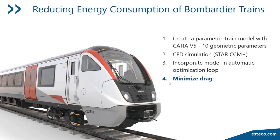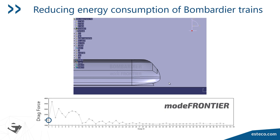We'll start with some real world examples. This first one is courtesy of Bombardier Trains. They used Mode Frontier to optimize the shape of their trains to minimize drag, which of course minimizes cost of operation and gives them a competitive edge. The solver in this case was CFD. Mode Frontier was used to drive the CFD simulation optimizing drag. You can see the shape of the train parameterized in CAD — in this case CATIA. The main idea is to change the shape of the front and rear end of the train.